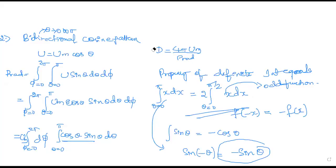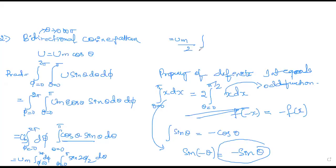Now do the integration part. Once you change the limit, the rest of the process remains the same. The only thing is you should understand when to change the limits. Integration of dφ = 2π. Integration of sin2θ is −cos2θ/2, with limit 0 to π/2. Take the 2 from sin2θ denominator outside.